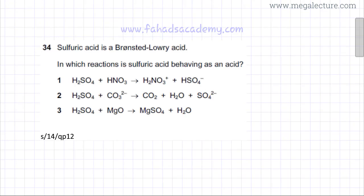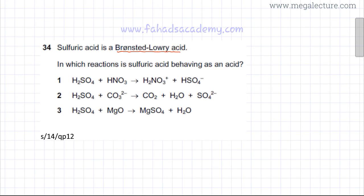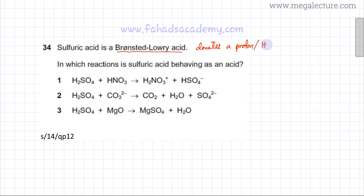The question states that sulfuric acid is a Bronsted-Lowry acid. By definition, a Bronsted-Lowry acid is one that donates a proton — in other words, it donates an H⁺ ion. H⁺ ions are called protons because hydrogen only has one proton; the entire atom consists of one proton.